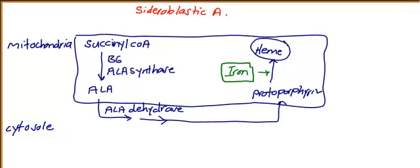Now imagine if you have a defect in this pathway. What is the end result? The end result is you will have excess iron in the mitochondria. If iron is trapped in the mitochondria, this will lead to iron...